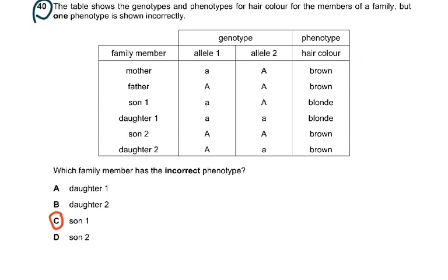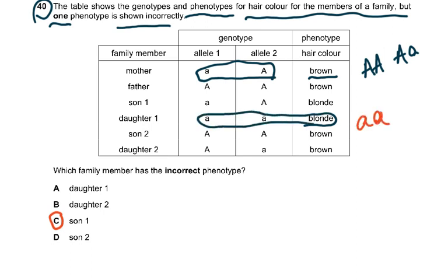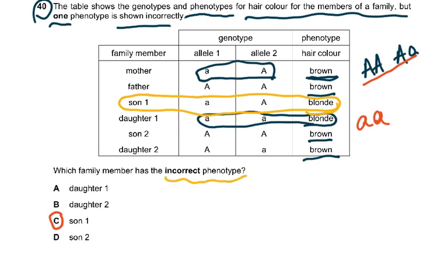Question 40: the table shows genotypes and phenotypes for hair color in a family, but one phenotype is shown incorrectly. Brown hair requires big A big A or big A small a. Blonde hair requires small a small a — blonde is the recessive characteristic. Checking each entry: the brown individuals were all either AA or Aa — all correct. The blonde individual was listed incorrectly, because blondes must be homozygous recessive (aa). So son one was the entry with the incorrect phenotype. This was not a very difficult question.